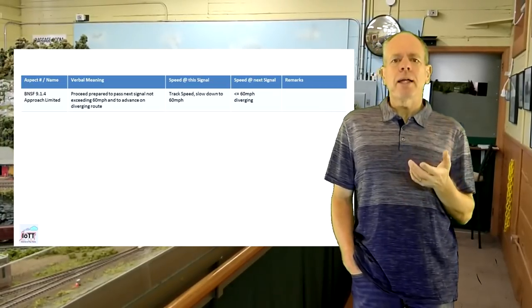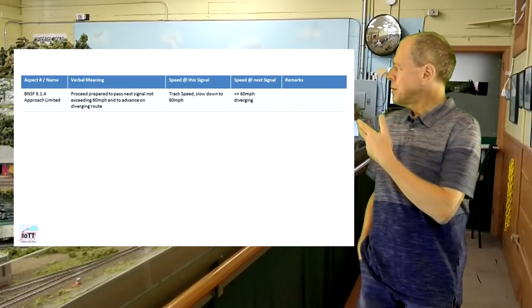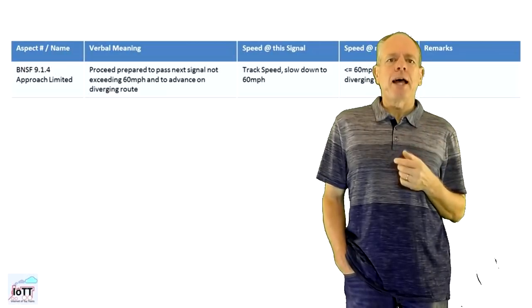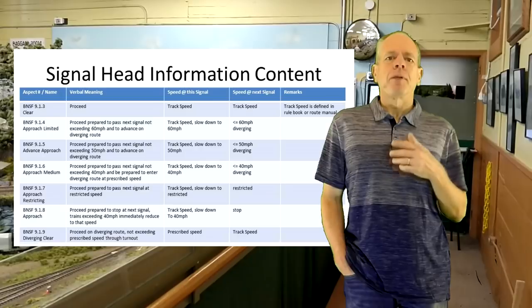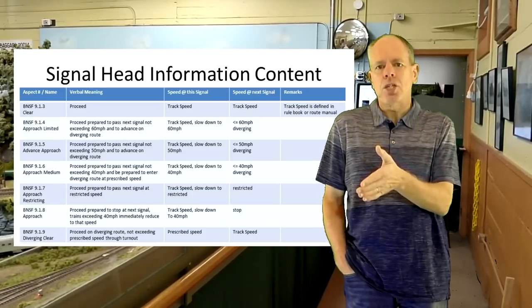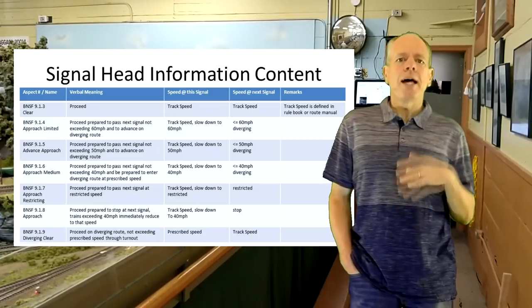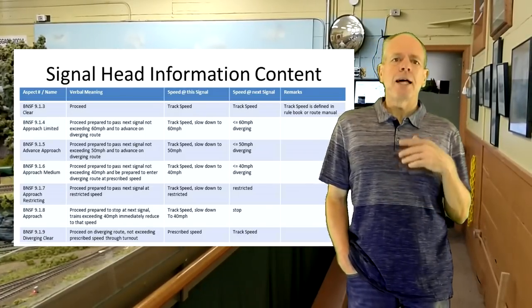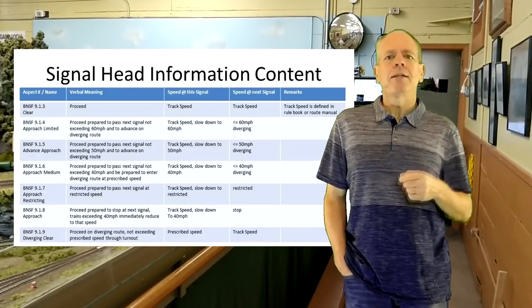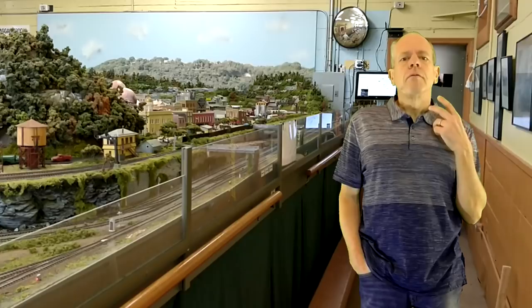This becomes clear when looking at the meaning of typical aspects, like here some examples from BNSF. This means the engineer can pass the current signal at the current speed, but has to make sure that he is not faster than 60 miles an hour at the next signal. You can go through all aspects. You will see the same pattern. The signal always shows the speed at the current location as a reminder, and the speed at the next signal location as new information. Plus, in some cases, it has an informational content, like diverging route, which has no impact on the engineer's actions except in areas where turnouts are operated by members of the train crew. For example, when a train has to move into a siding between interlocks in order to let another train pass.